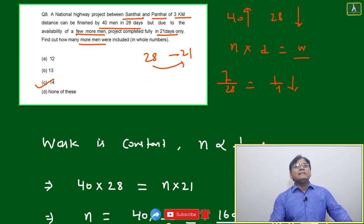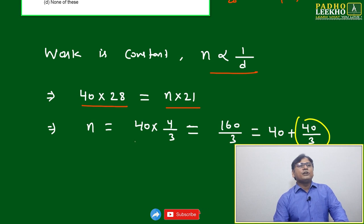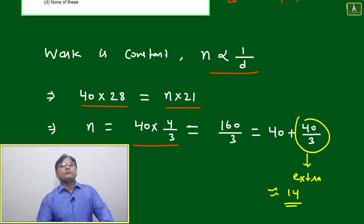Then that will increase by how much? Just like this one, work is constant. N times d equals work. 40 times 28 equals n times 21. So it will be 40 by 3, which is 33.33, or you can say 1 by 3, 1 by 3.